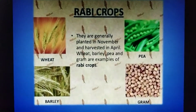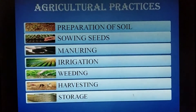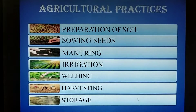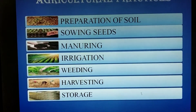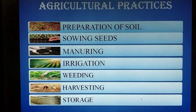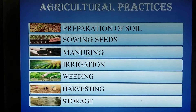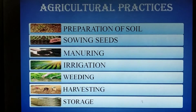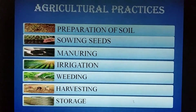For the production of crops, we need to follow some basic agriculture practices. These are: first, preparation of soil; second, sowing; third, adding manure and fertilizers; fourth, irrigation; fifth, protection from weeds; sixth, harvesting; and seventh, storage.